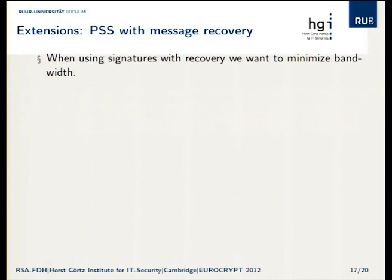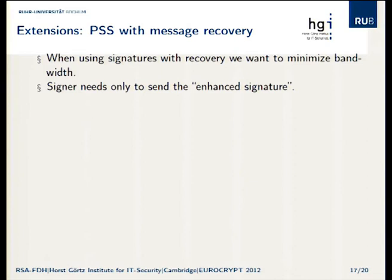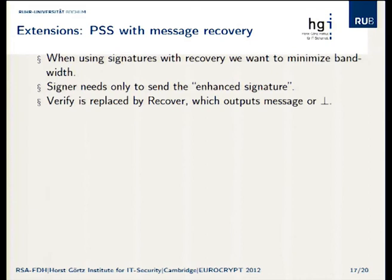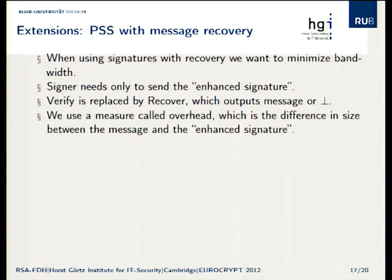Why do we use message recovery type signatures? We're trying to reduce bandwidth and minimize communication. Normally you have to send a message and a signature, but with this scheme you only need to send what we call the enhanced signature. The receiver uses a recover function — which replaces verify — that recovers the message and verifies the signature. If the signature is valid it gives you the message; otherwise it outputs a special failure symbol.